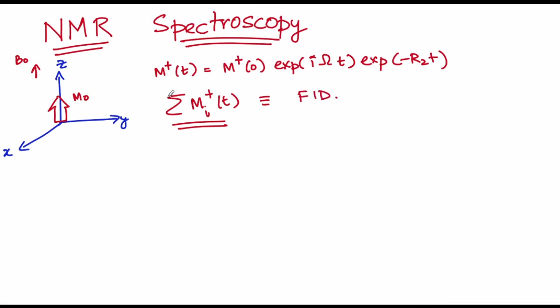However, this bulk magnetization picture is not helpful if you want to understand complex NMR experiments. So we started to look at the quantum picture of this entire process, where we said a given wave function can be represented as a superposition of states.